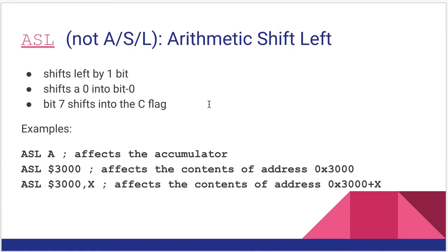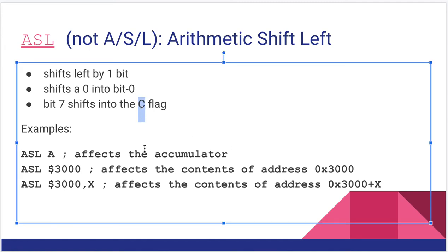A few other things — we talked about shifts in the earlier lecture and we have those available in the 6502. The first is arithmetic shift left, ASL: it shifts everything left by one bit, shifts a zero into bit 0, and bit 7 goes out into the C flag (carry). We can do this on the accumulator by putting an A where the operand goes, or directly on a memory location, or on an indexed memory location.